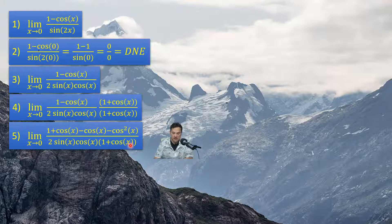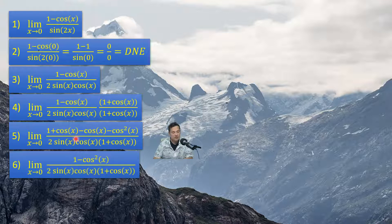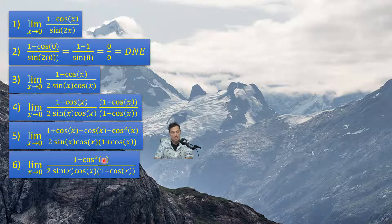Let's continue. The next step is to observe that when we transition from 5 to 6, cos x and negative cos x obviously will cancel. That leaves only 1 minus cos squared x as step number 6 in the numerator. The bottom is untouched.